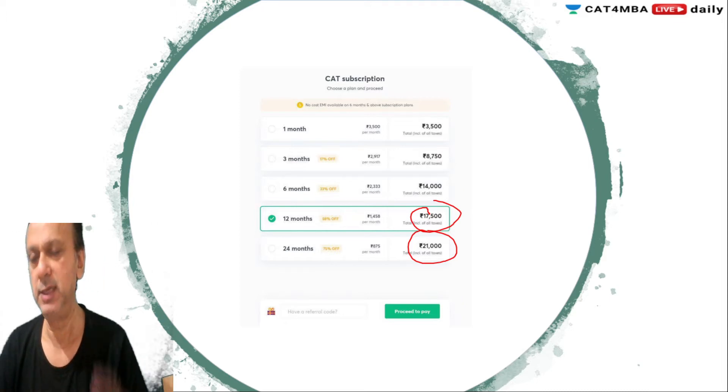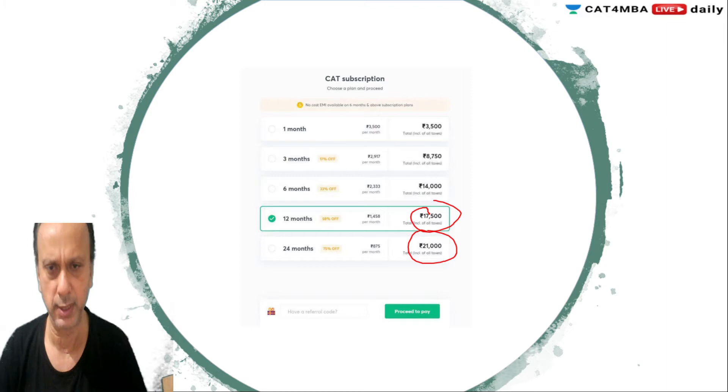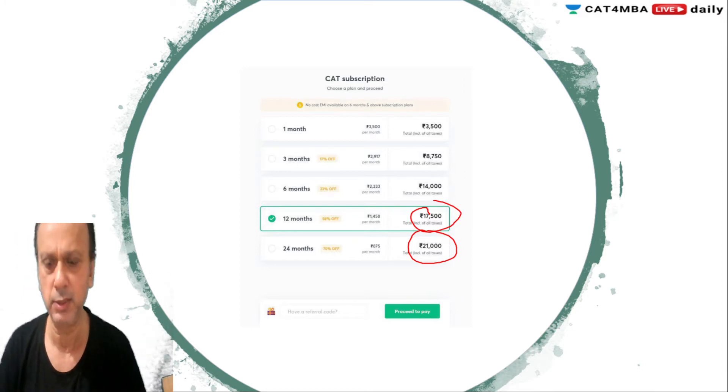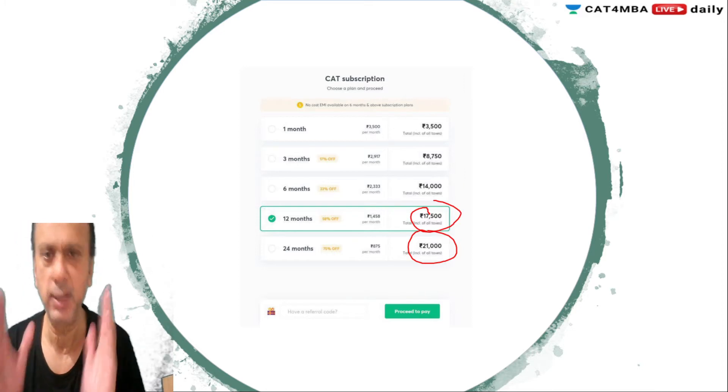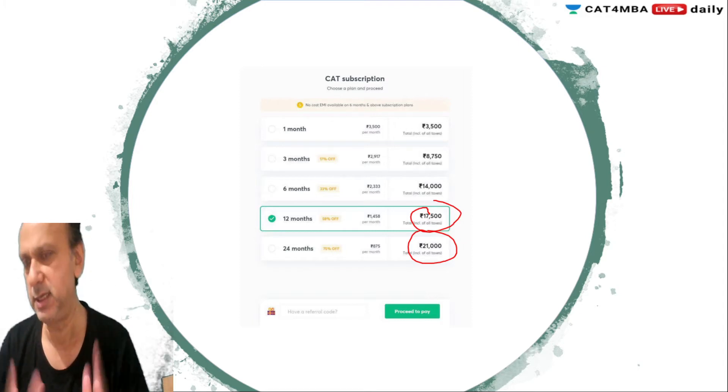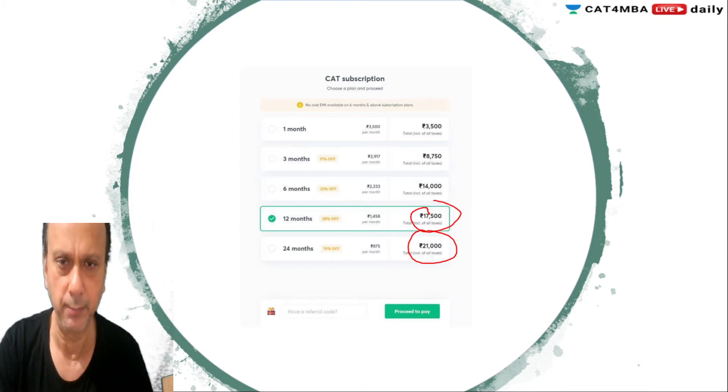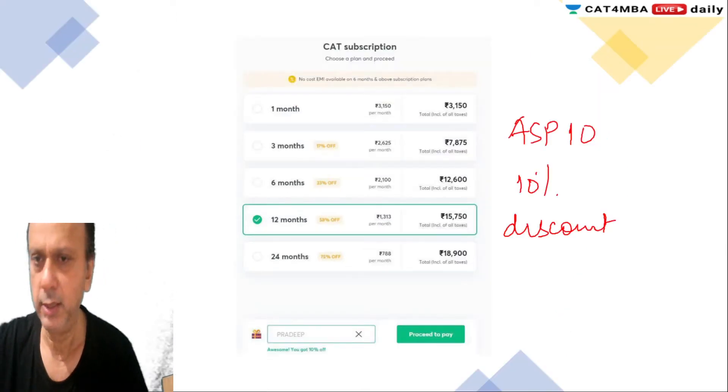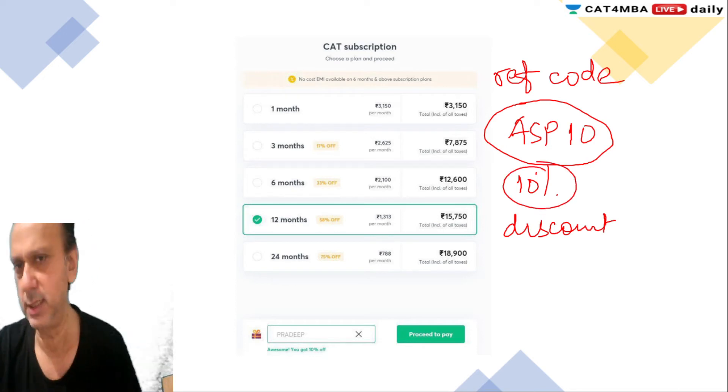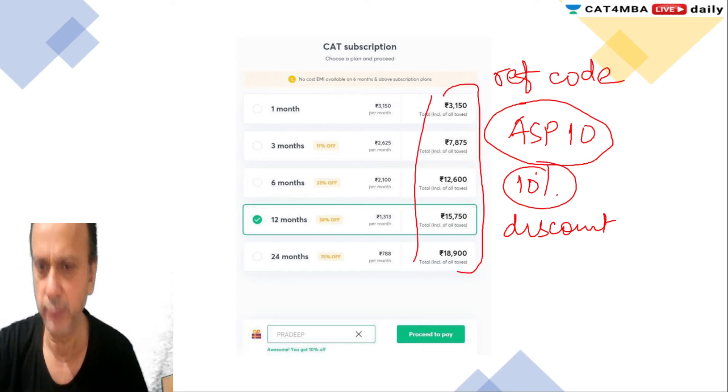I generally suggest going for the 12-month CAT subscription which is only ₹17,500. Those in second or third year can plan for the next couple of years, for them the charges are only ₹21,000. Not only that, those specifically focusing on OMETs have 3-month, 6-month packages as well. You can have a look at them. If you use my referral code ASP10, you will get 10% discount. These are our discounted figures.